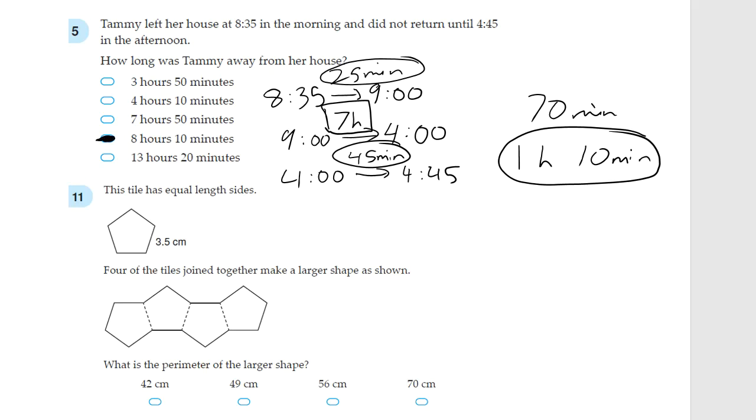Question 11. This tile has equal length sides. So this is a pentagon as you can see, and each side has a length of 3.5cm. 4 of the tiles join together in a larger shape as shown. What is the perimeter of the larger shape? Let's pick somewhere to start. Let's just say here, so 1, 2, 3, 4, 5, 6, 7, 8, 9,